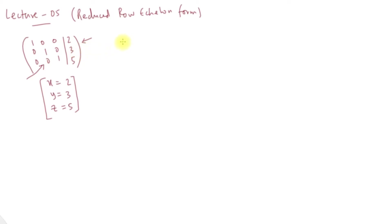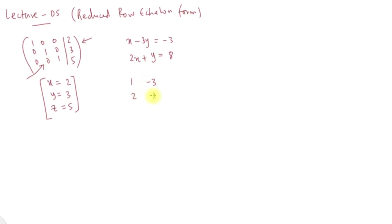For example, we have the system: x minus 3y is equal to minus 3, and 2x plus y is equal to 8. The augmented matrix A is: 1, minus 3, minus 3 and 2, 1, 8.